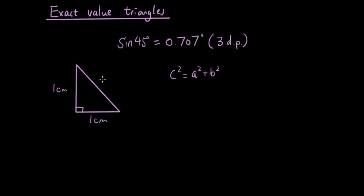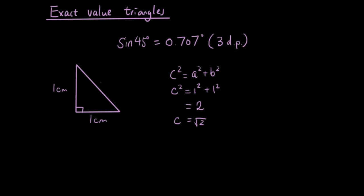So c squared equals a squared plus b squared. If this is c, then c squared equals 1 squared plus 1 squared. 1 squared is 1, so 1 plus 1 is 2. So c is equal to the square root of 2. I'm going to replace the hypotenuse with the square root of 2.